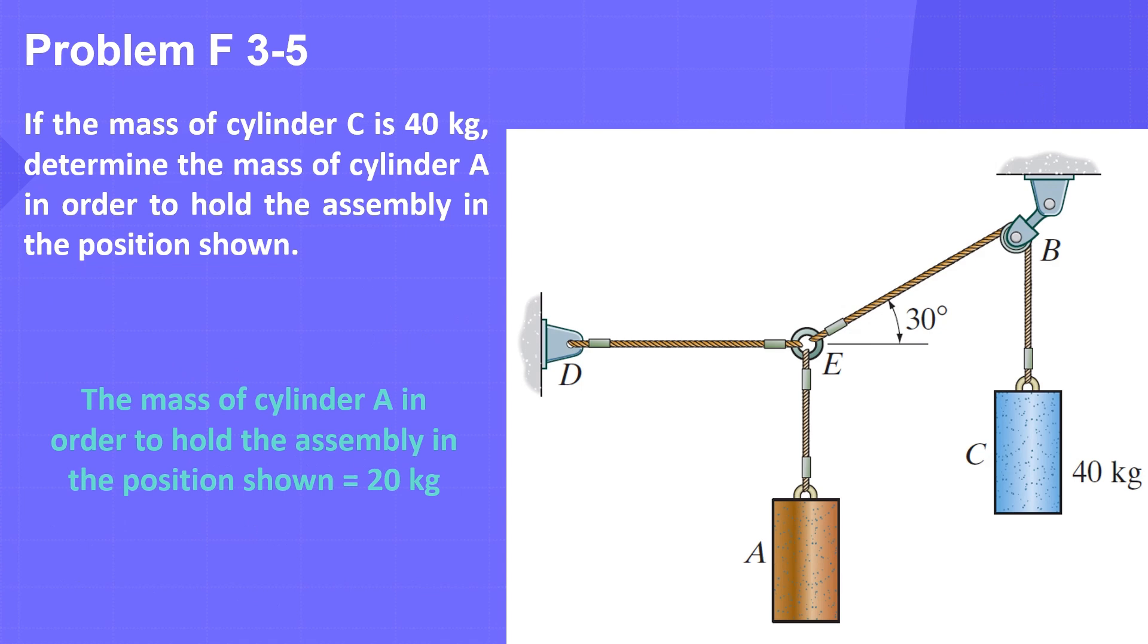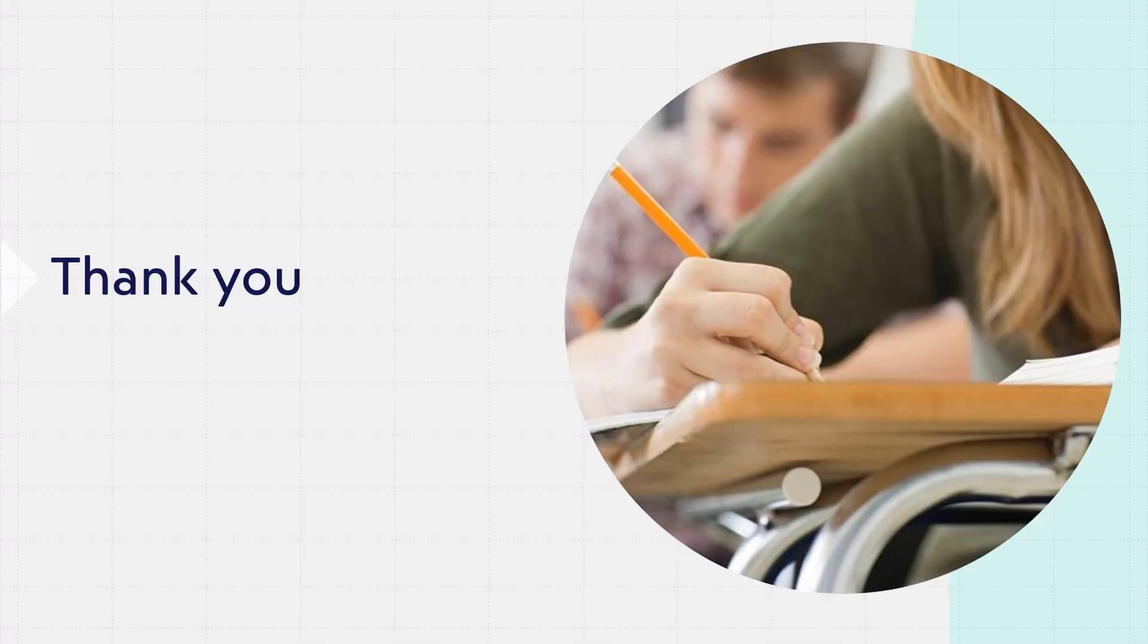So, the mass of cylinder A in order to hold the assembly in the position shown is 20 kilograms.